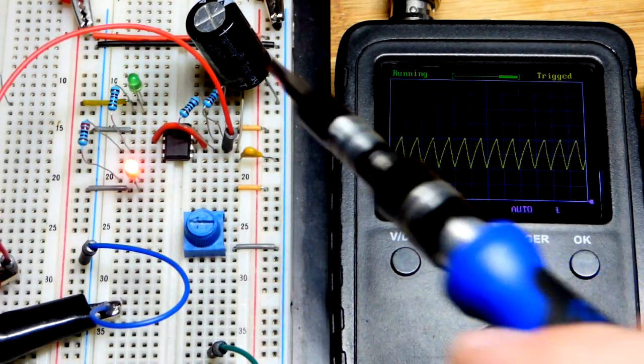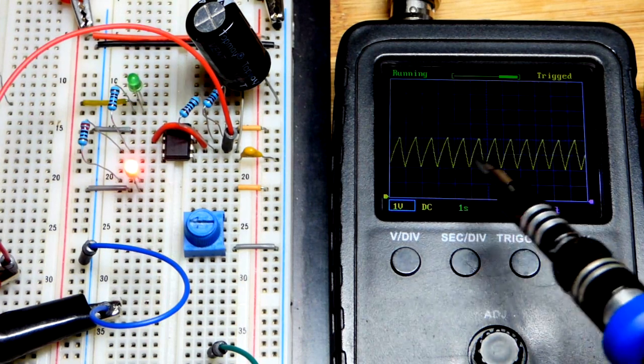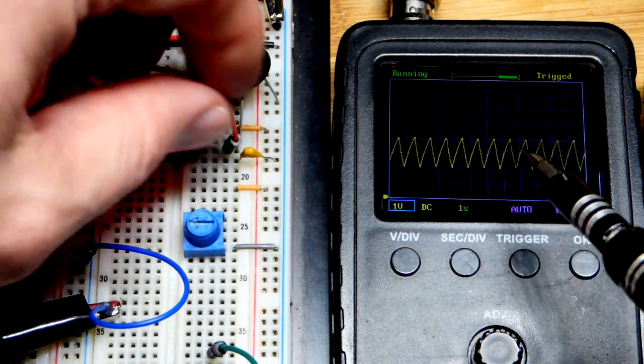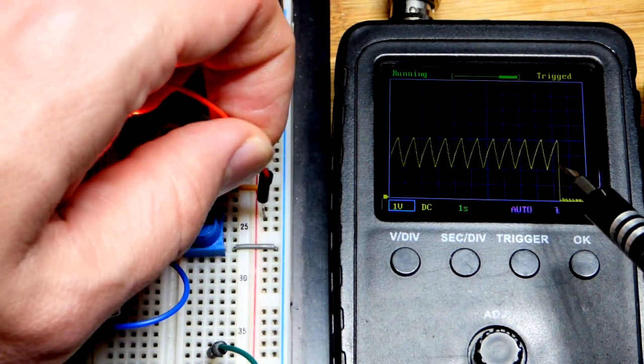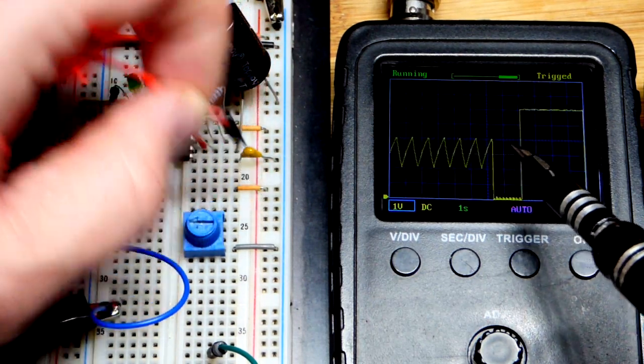So now in this video we're going to look at the 555 timer in astable mode right here. The capacitor is charging to two-thirds supply voltage, so we got six volts there, it's charging to four volts.